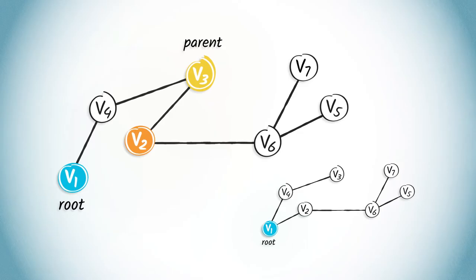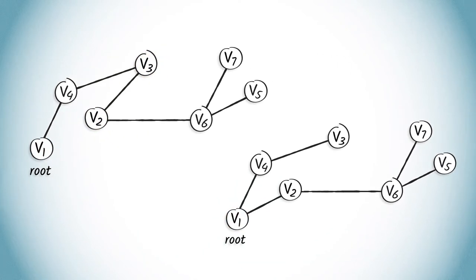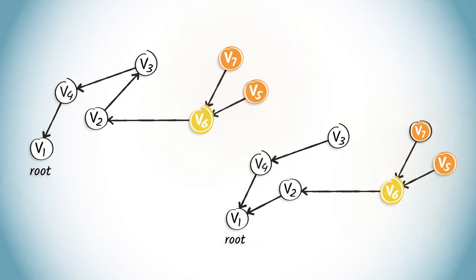A child of a vertex V is a vertex of which V is the parent. So, V2 is a child of V3 in the tree on the left. If we apply these concepts on the whole trees, we obtain the following rooted trees where the orientation of the edges indicates the parents of the vertices. For example, in both graphs, V1 has no parent, the parent of V4 is V1, and the children of V6 are V7 and V5.